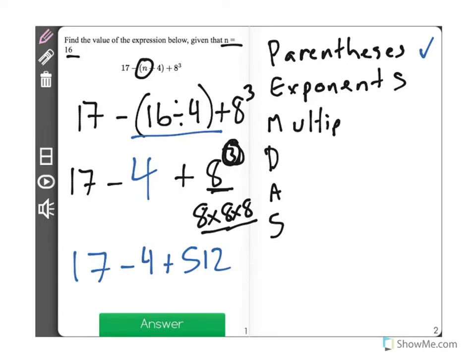Next up, we do multiplication and division together from left to right. It doesn't matter which one comes first. We just work our way from left to right. However, there are none, so we're going to go ahead and check those off and move on to the last step,